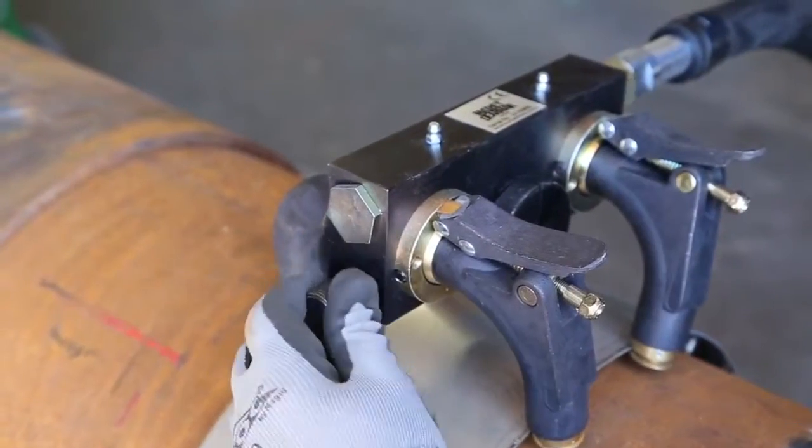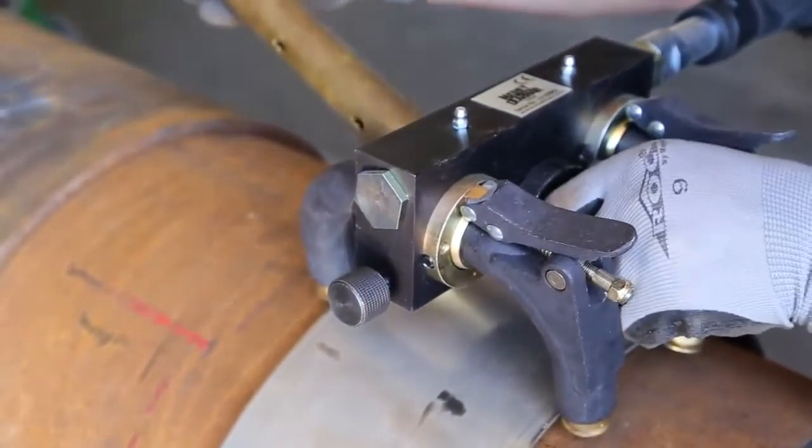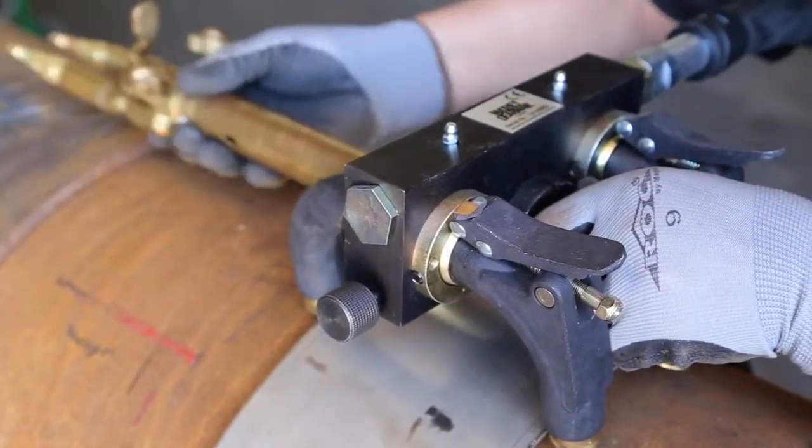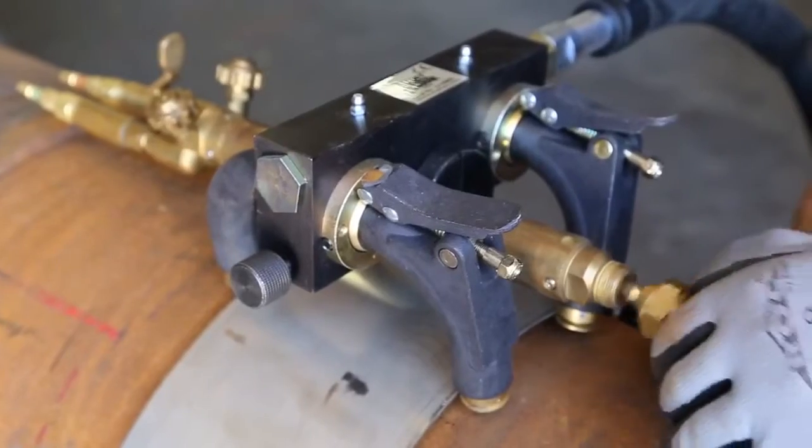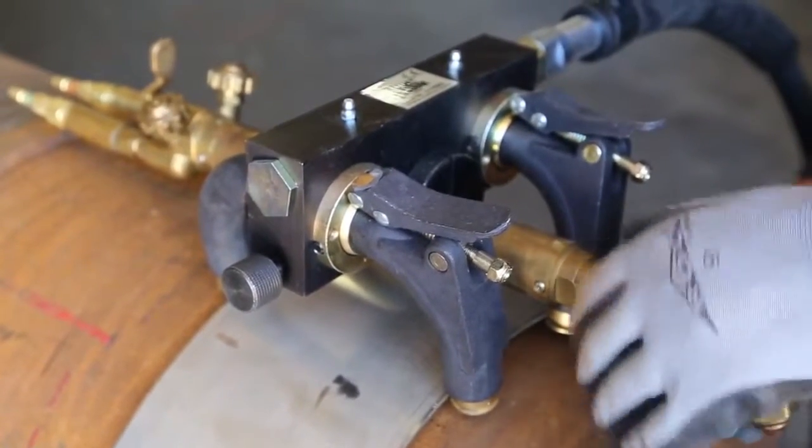Install the machine barrel torch into the eccentric torch holder, followed by the torch head angle adapter and properly sized tip.